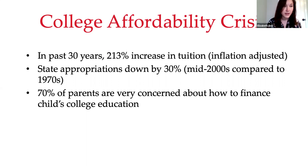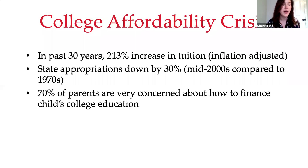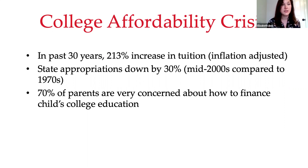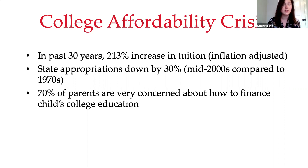So we have less money coming in from the state, and a lot of universities have responded by increasing tuition rates. This leaves us with the college affordability crisis, where students and families are shouldering more and more of the cost of college. 70% of parents indicate that they're very concerned about how to finance their child's college education. We also know we face a huge student debt crisis: $1.3 trillion in student debt right now, unevenly distributed across different racial and ethnic groups, with serious implications for low-income students and students of color.